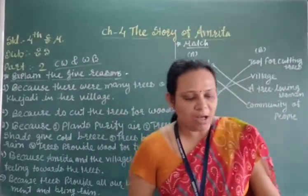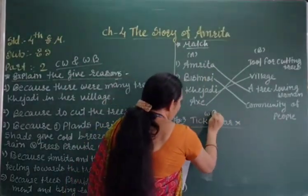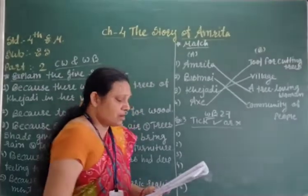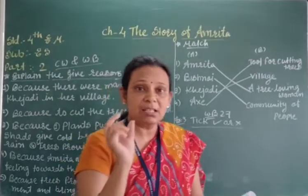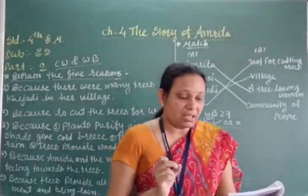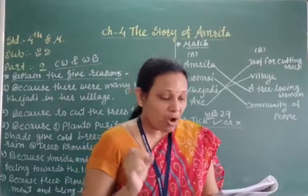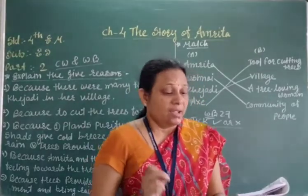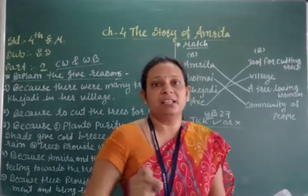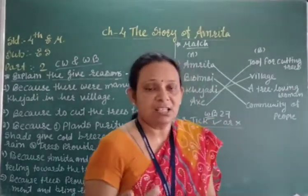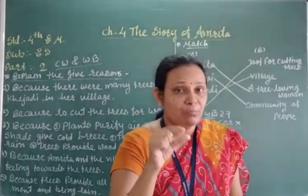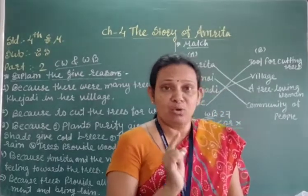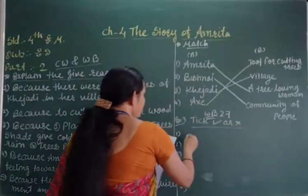Now we see tick right or wrong on page number 27 of the workbook. First number: Amrita lived in Jodhpur city of Rajasthan — this is incorrect. It is partially right and partially wrong. Because Amrita lived near Jodhpur city in Khejri village, Rajasthan. Jodhpur is right as a reference point, but she lived in Khejri village near Jodhpur, not in the city itself. Since the statement doesn't mention Khejri village, we consider it wrong.